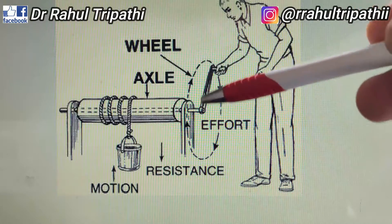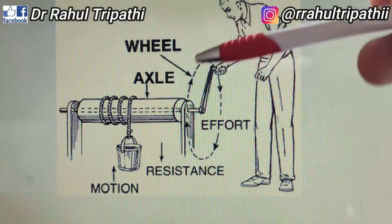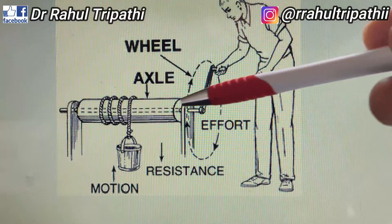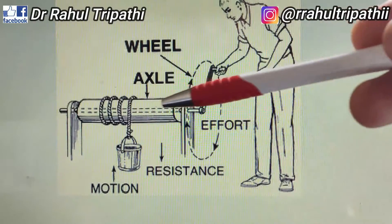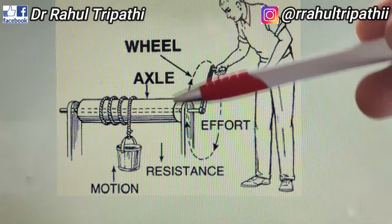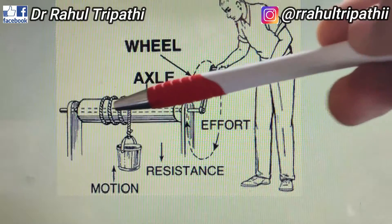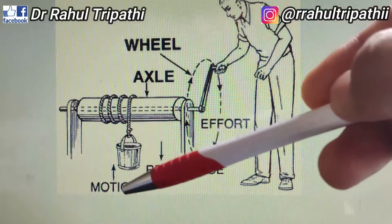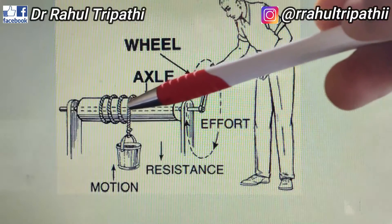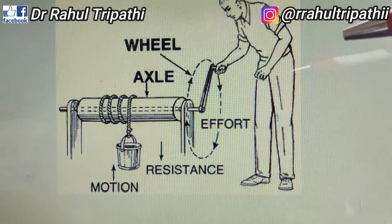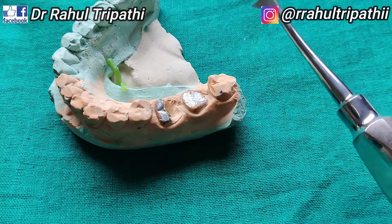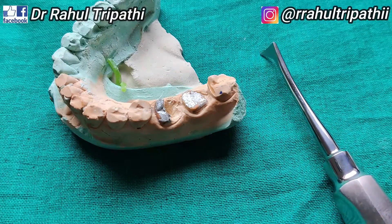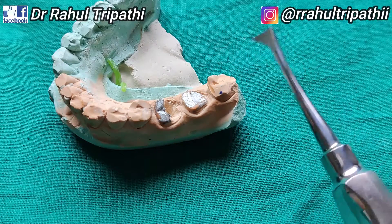The handle on this elevator acts like the wheel, and the shank acts like the axle. You rotate the handle, and the other part — the shank — rotates around it. This elevator is the Cryer elevator, which works on the wheel and axle principle.